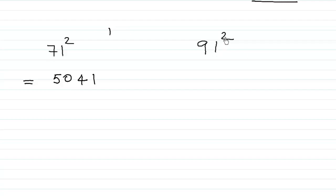And the same way, 1 squared is 1, 9 times 2 is 18, 1 carry. 9 squared, 9 times 9 is 81 plus 1 is 82. So this is a faster method to find the squares of the numbers that end in 1.